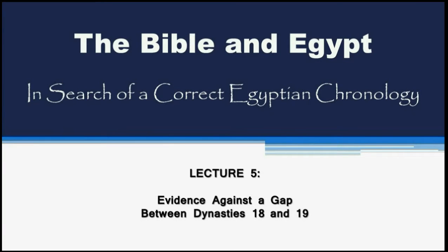Welcome to the fifth lecture in this series, 'The Bible in Egypt: In Search of a Correct Egyptian Chronology.' Previously we looked at the strengths and weaknesses of various views identifying the pharaoh the Bible calls Shishak, and the best fit for events in the El Amarna letters from the late 18th dynasty. The synchronisms pointed to the 18th dynasty ending just before 800 BC. In the next two lectures we'll look at the squeeze of dynasties problem and resolve one of the most puzzling mysteries of ancient history.